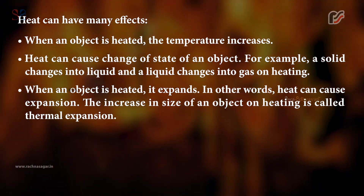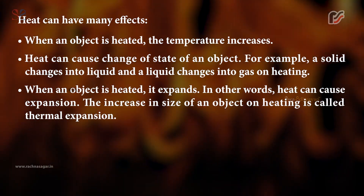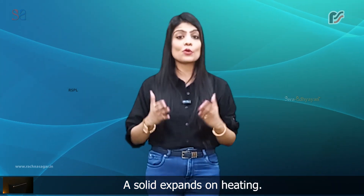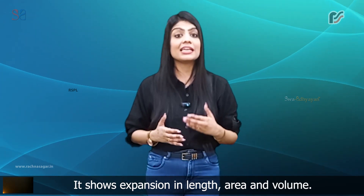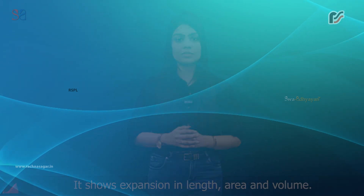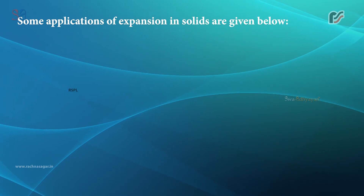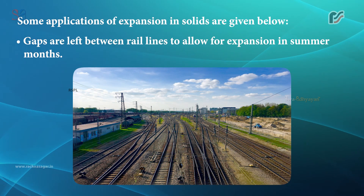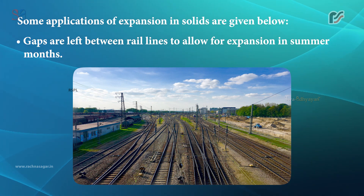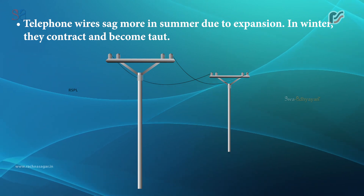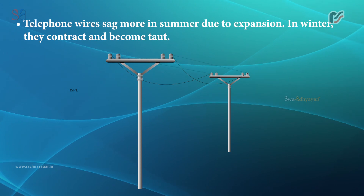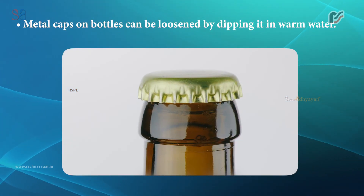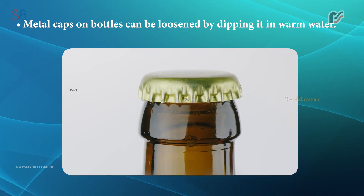Expansion in solids: A solid expands on heating and shows expansion in length, area, and volume. Some applications: gaps are left between rail lines to allow for expansion in summer months; telephone wires sag more in summer due to expansion and become taut in winter; and metal caps on bottles can be loosened by dipping them in warm water.